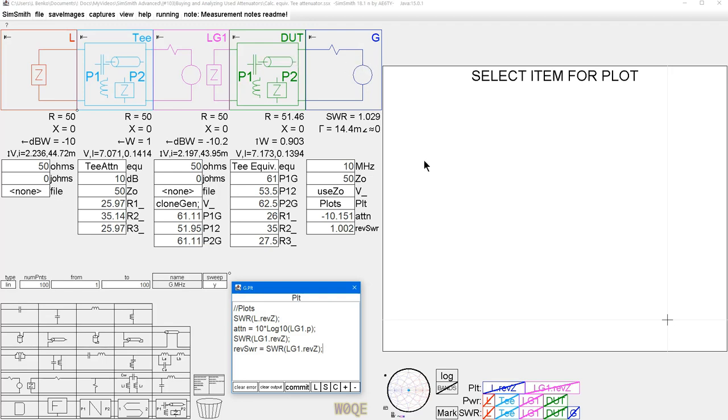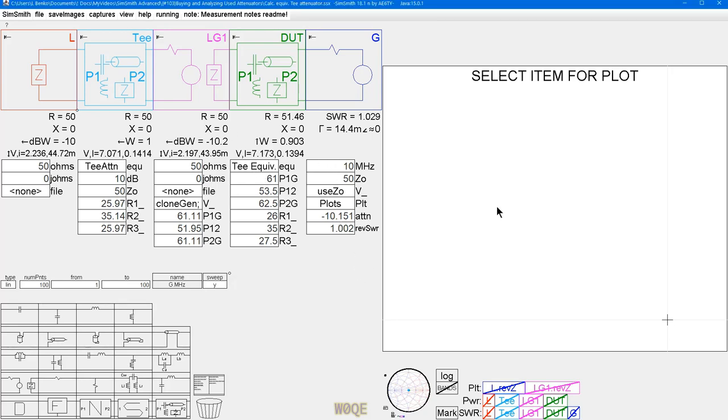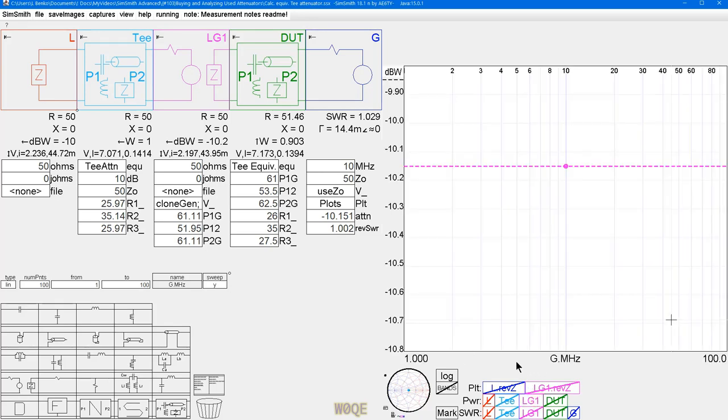In the case of SWR, we can read SWR up here looking this direction, 1.029 to 1. This direction going backwards, I calculated it here. It's SWR of LG1 dot REVZ and it's 1.002. We could also look at it on a square chart. On a square chart, the attenuation, the output power shows 10.2 down here, but really it's 10.15. We can see on the graph. So it's 10.15 dB attenuator.